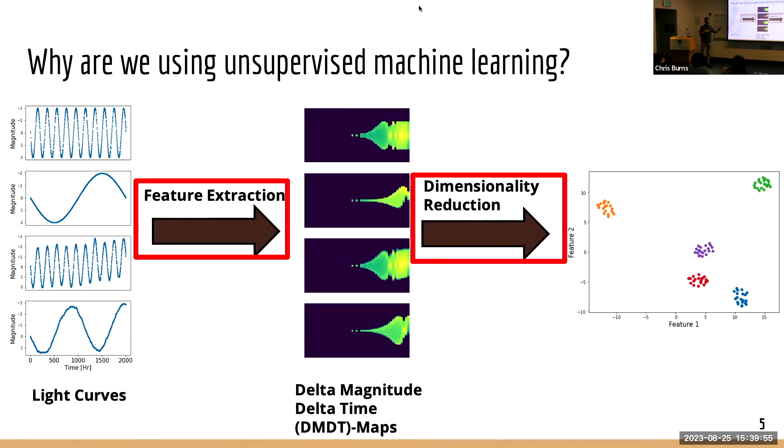And I forgot to mention that this is really important technique for being able to mine rare and anomalous types of sources. Additionally, finding the hidden relationships in the data and understanding the physical processes that are driving those relationships.